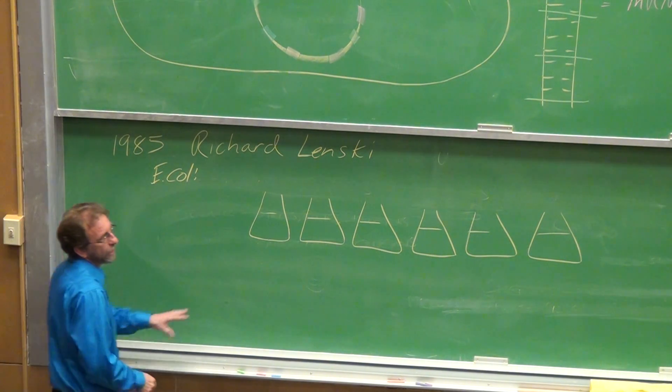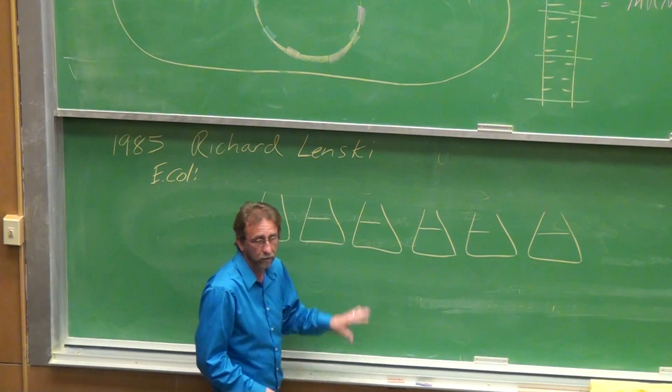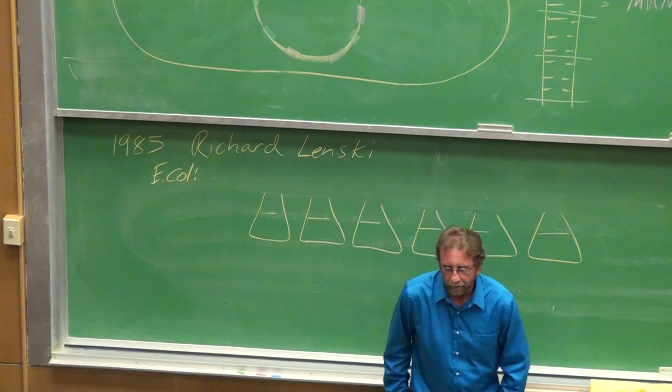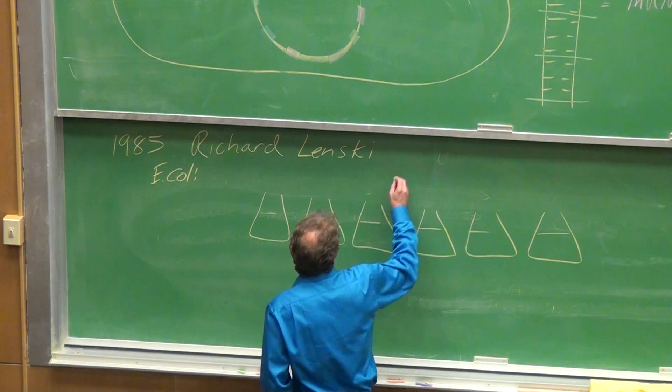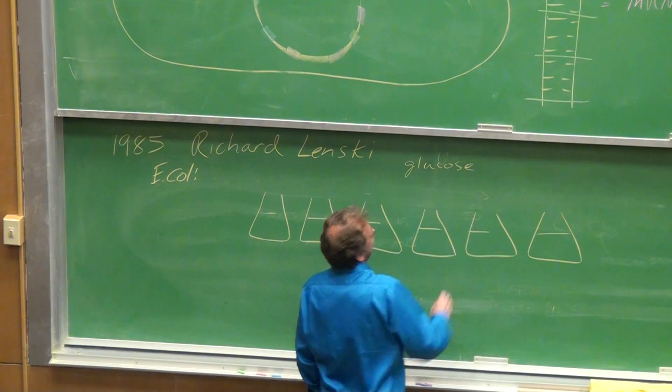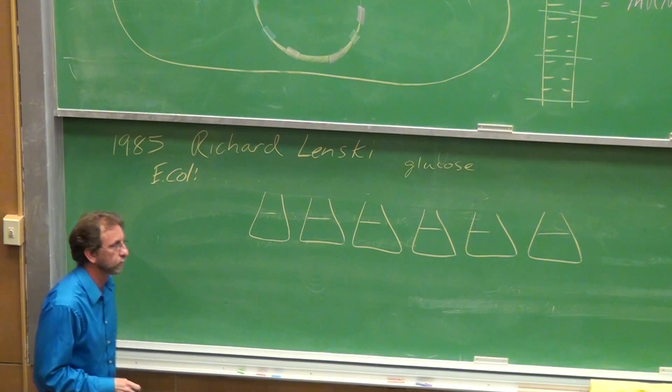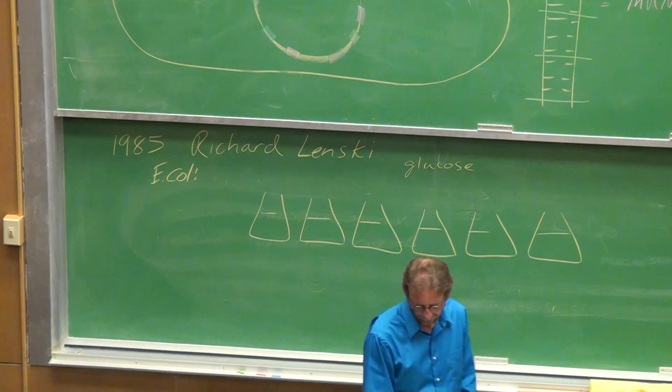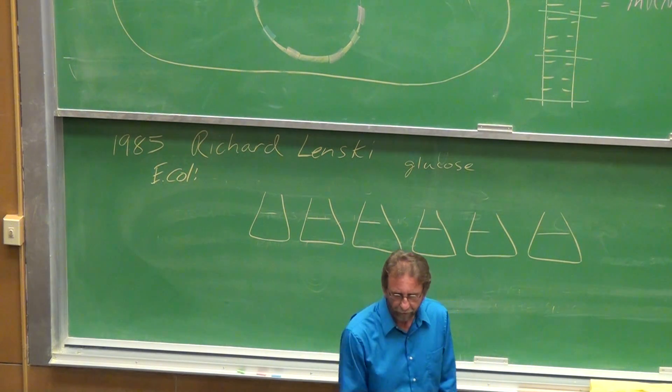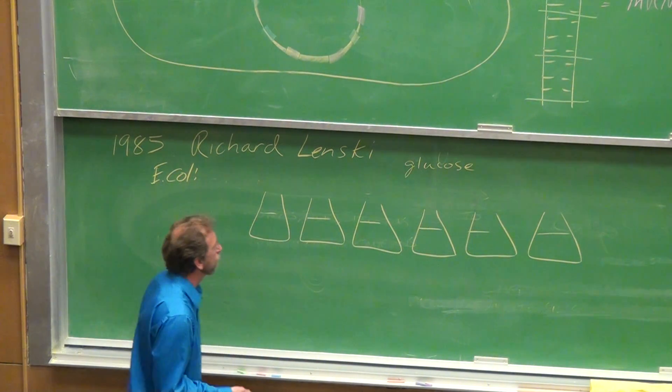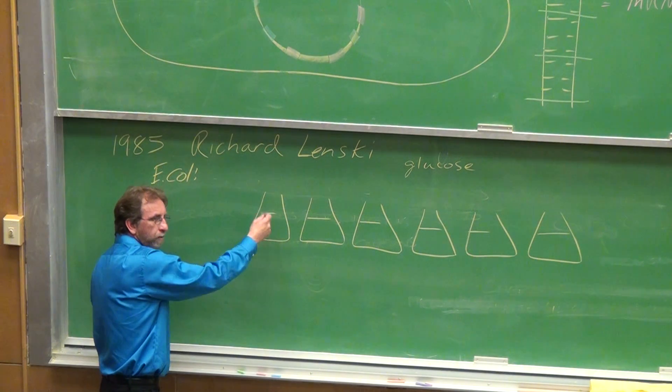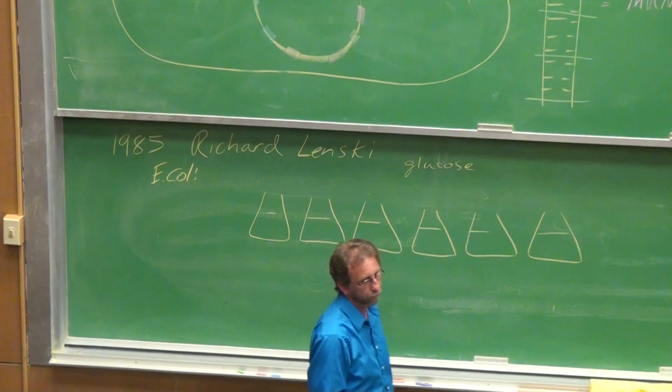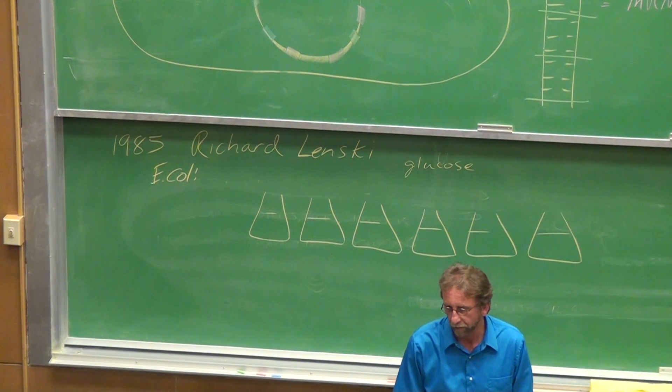But each one of these flasks then were started with cells that were genetically identical, coming from the same strain, the same colony, if you will. He used a nutrient broth and the only fuel source was glucose. So he kept these lines separate for 20 years and every day he would take one ml from the culture and transfer it into a new batch of media to keep the culture going.